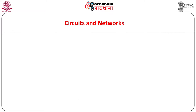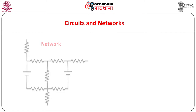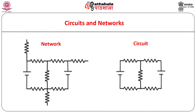Many times we use the term electrical network. There is a slight difference between the two terms — electrical network and circuit. In a circuit, starting from any point, we can reach to the same point by using a closed path without retracing any of the previous paths. It may not be the situation with a network. That is why every electrical circuit is a network, but a network need not necessarily be a circuit.